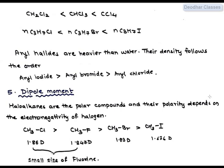The value for dipole moment of methyl chloride is 1.86 Debye. That of fluoride is 1.847 Debye. For bromide, it is 1.83 Debye. And that for iodide is 1.636 Debye.